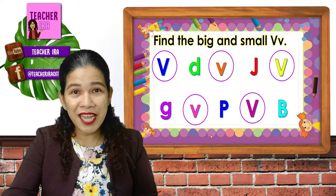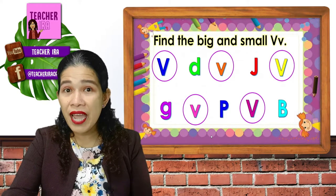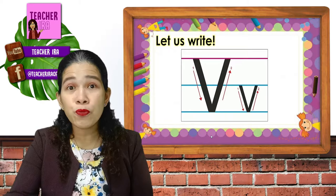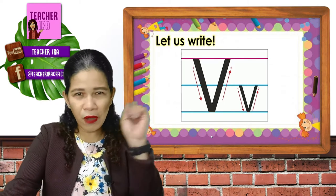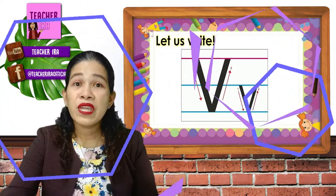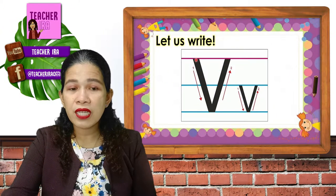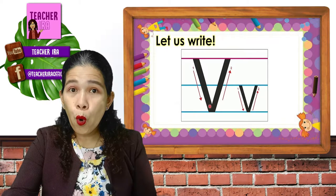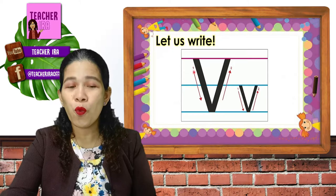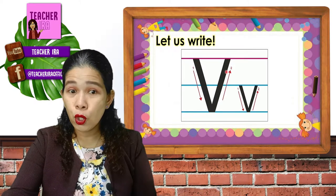Now, I know that you know the letter V already, but let us learn how to write it properly. Here are the big and small letter Vs. Follow the arrows with your pointer finger and let us start writing. We are going to make a slanting line going down — whoop! — and up — whoop! Easy, right? One more time: whoop! And whoop!